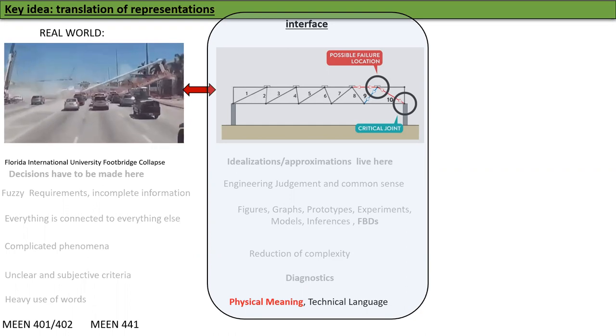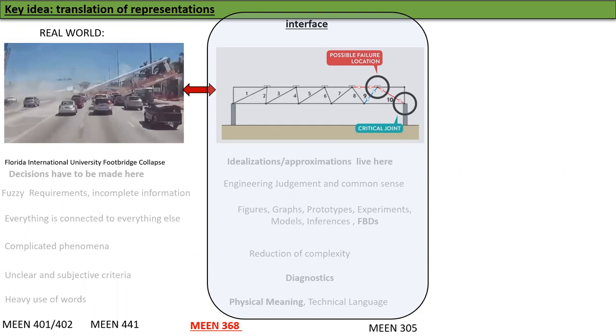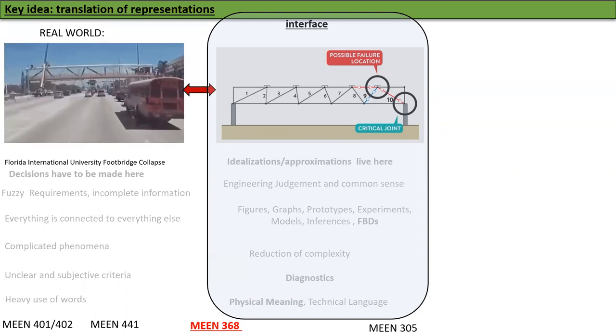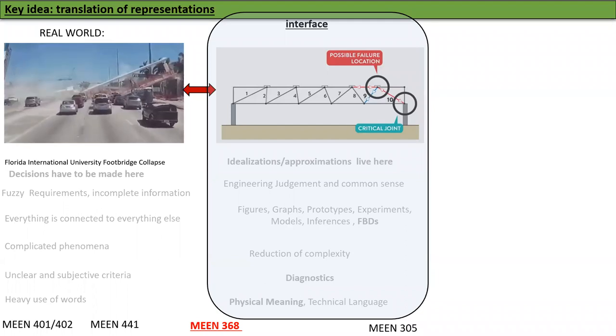We have one more item, to reason in this interface world. By the way, this is where MEEN 368, this class, design of machine elements, lives. In the interface between the real world and this world. MEEN 305 is closer to the other end of this, but between these two classes is where we deal with the interface.